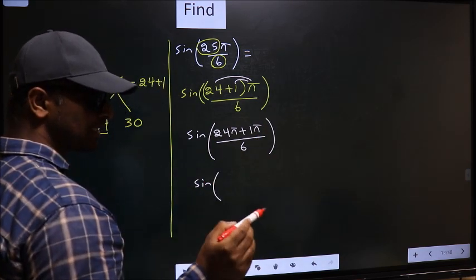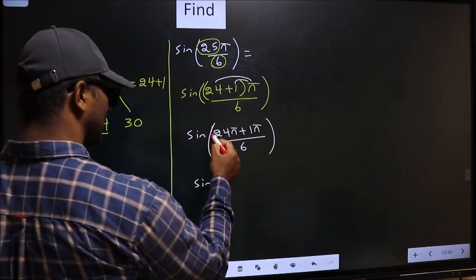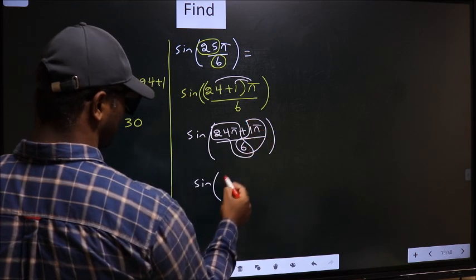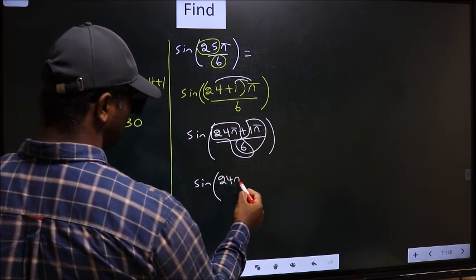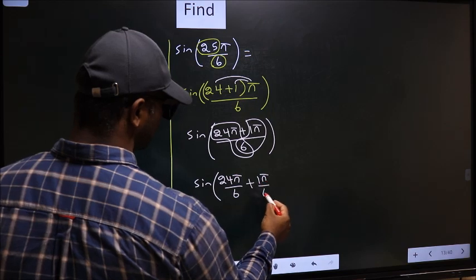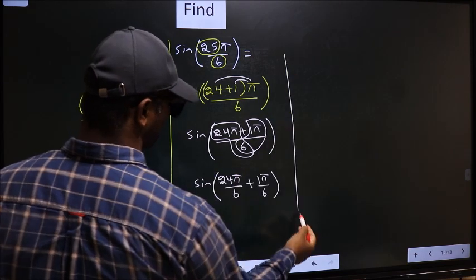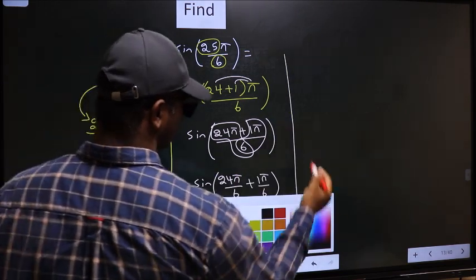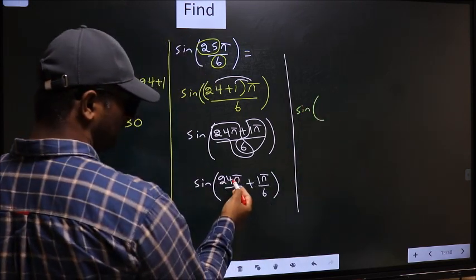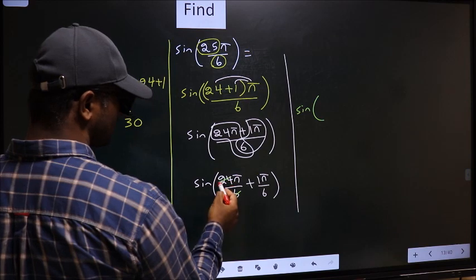Now sine of, you should split the denominator in this way. That is 24π by 6 plus 1π by 6. Next, sine of 24π by 6. You cancel 6 ones, 6 fours.